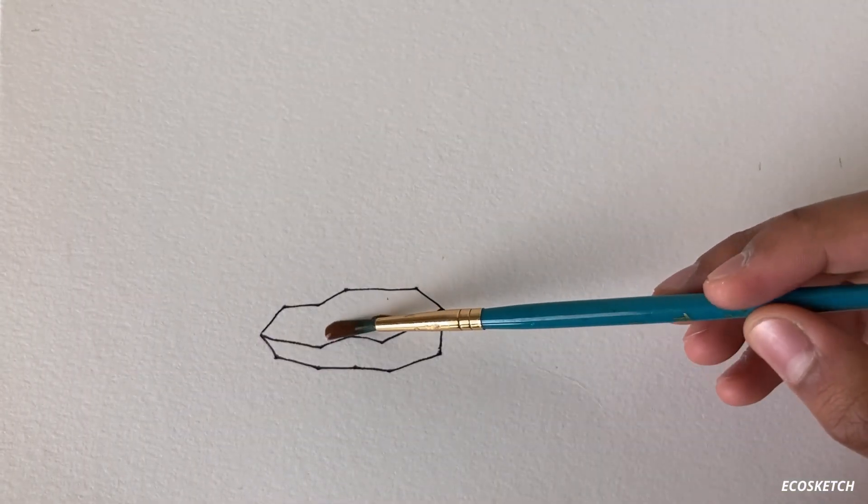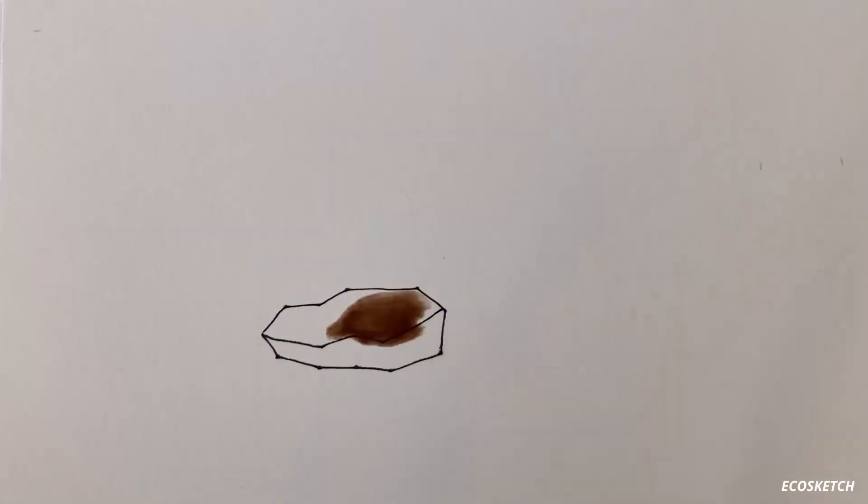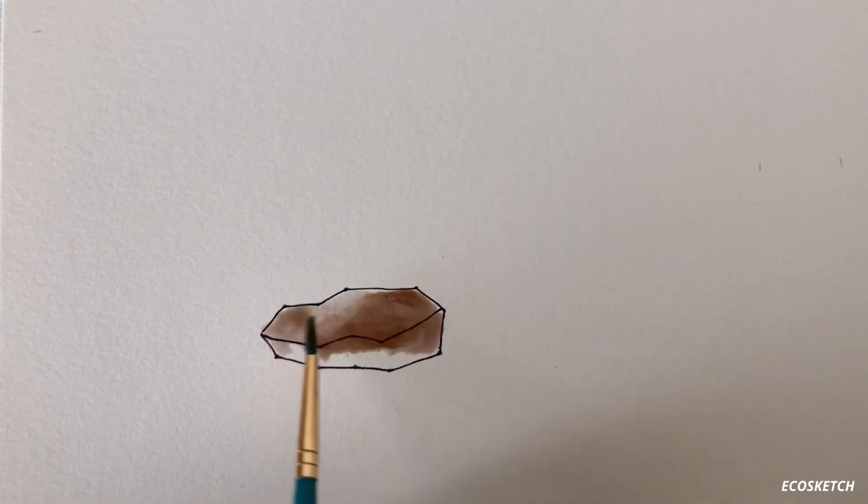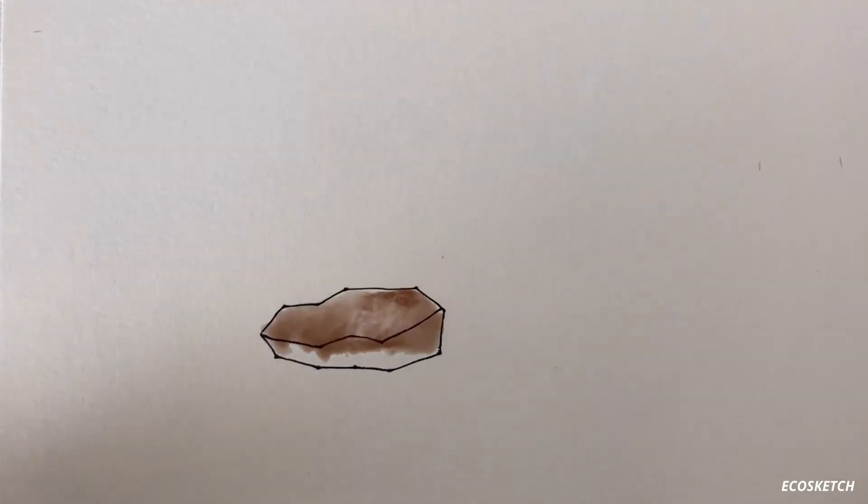Next, use some watered-down burnt umber. I start distributing the paint across the rock, adding more pigment at the bottom end since the light source is coming from the left side. If you add too much pigment where the light source is coming in, like I did, use a paper towel to remove some of the paint and then use the brush to distribute the rest. The burnt umber acts as the base color of the rock.